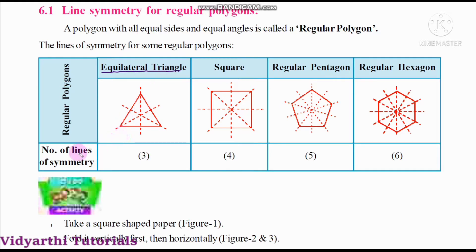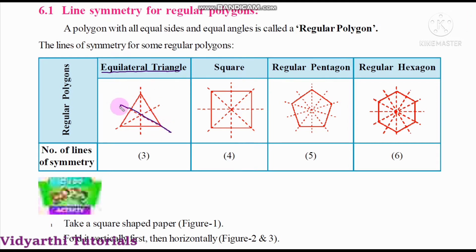Let us observe how many lines of symmetry we can draw for an equilateral triangle. Look at this first line — if we draw this line, two equal triangles are formed. Similarly, observe the second line — this line also divides the triangle into two equal halves. And similarly a third line of symmetry can be drawn. Total we can draw three lines of symmetry for an equilateral triangle.